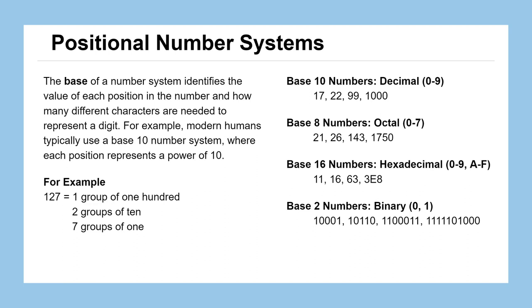But there are other base systems that could have been used for counting. So besides our base 10, which uses the numerals 0 through 9, you could have a base 8 system, which is called octal, and it only uses the digits 0 through 7.